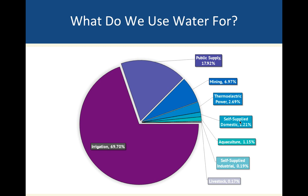Irrigation is the number one use of water — we use about 70 percent of our water for it. Public water supplies account for what you use in your home for cooking, cleaning, bathing, and drinking. The main things to know are that the majority of water use is for irrigation, followed by use in the home.